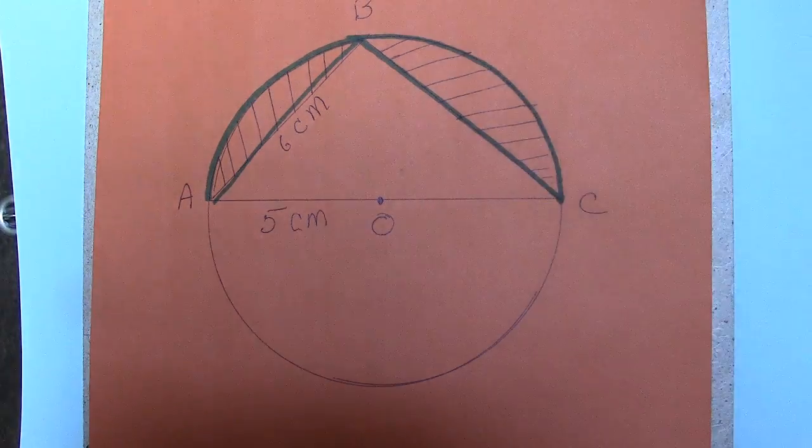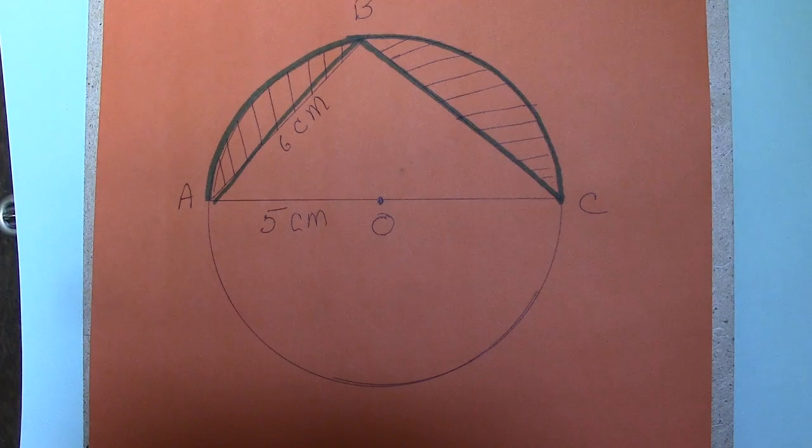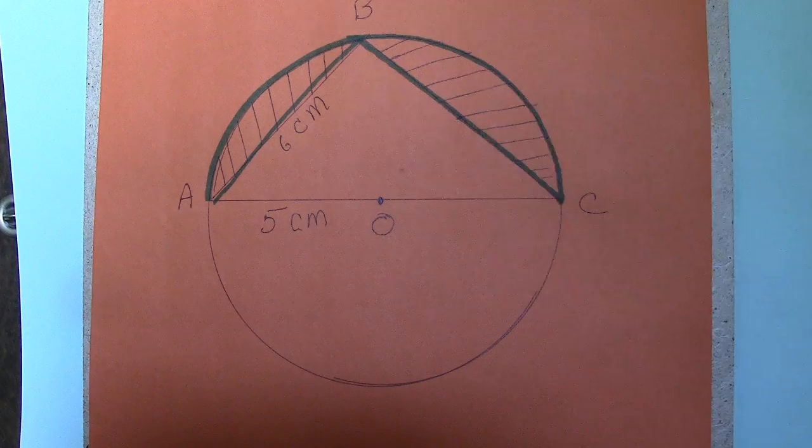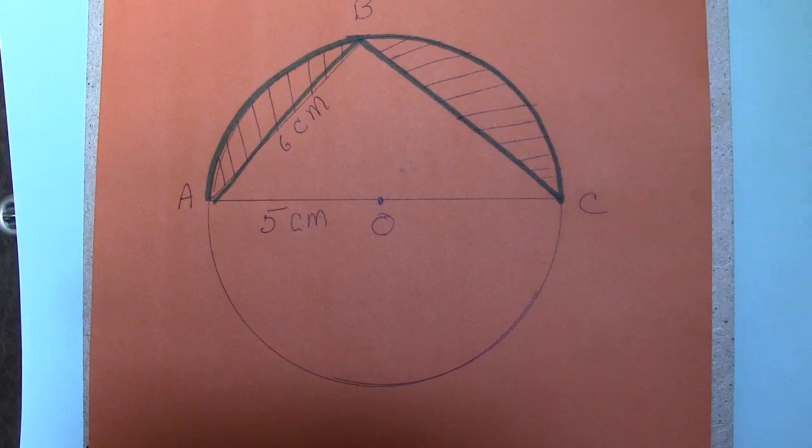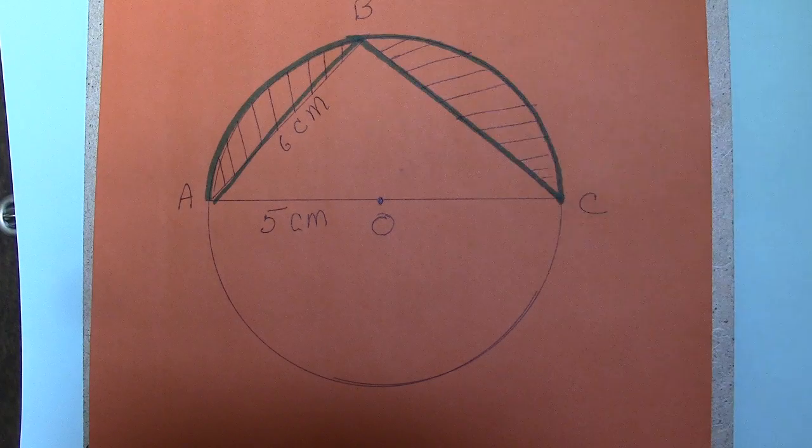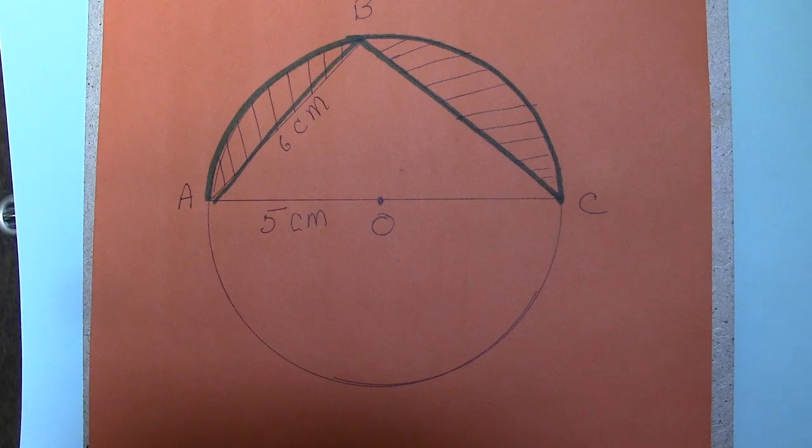What I want you to take away from this is a problem like this can be done mentally. The circumference of the circle is 2πr. So half the circumference, which is the arc ABC, is πr. R is 5. So ABC is 5π.